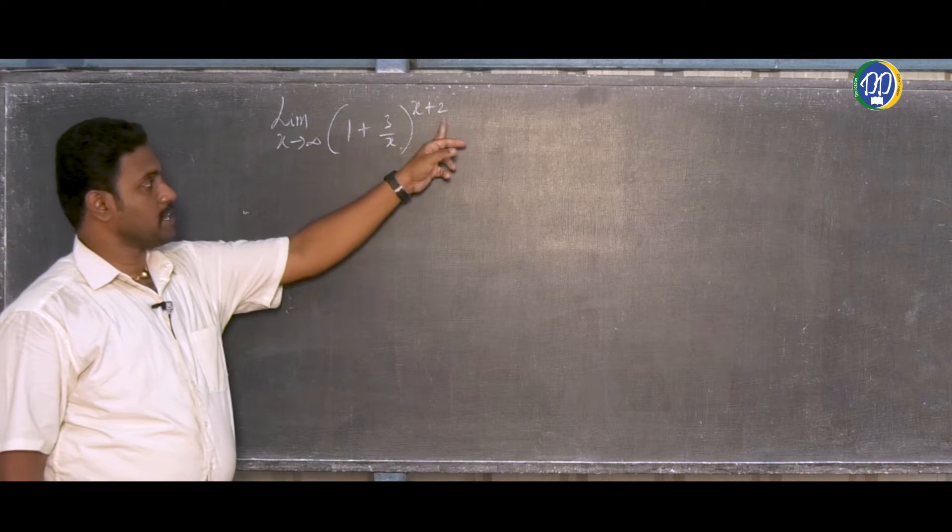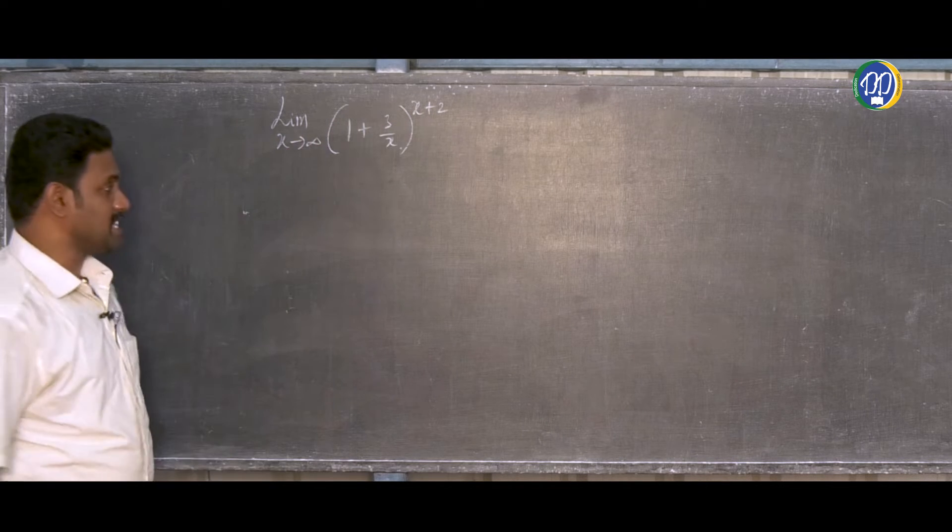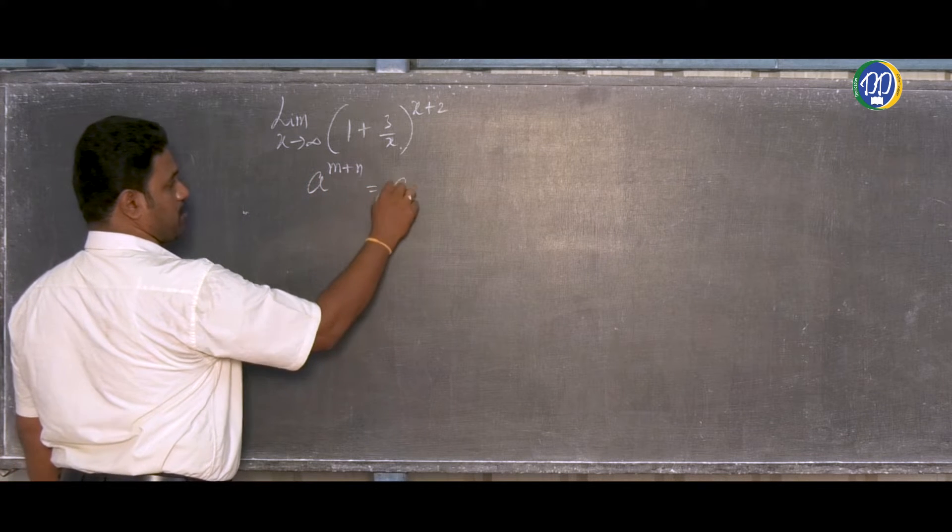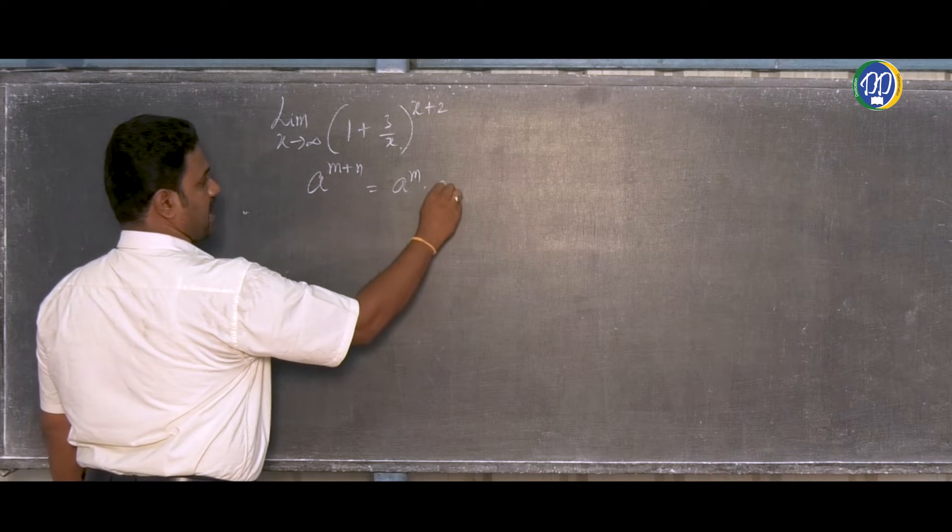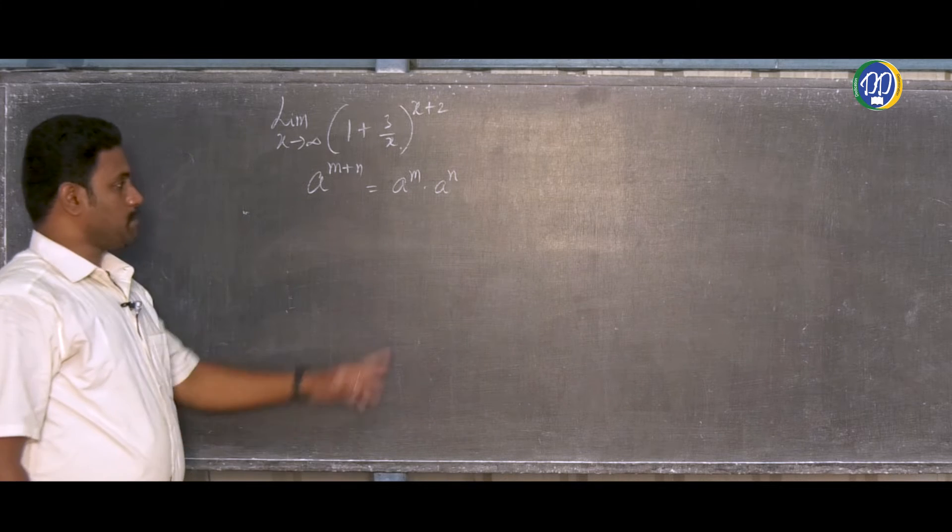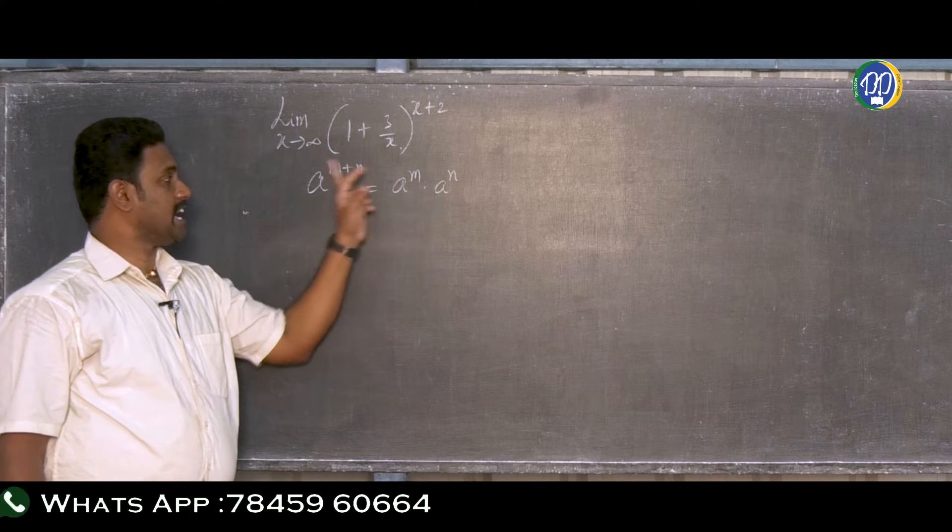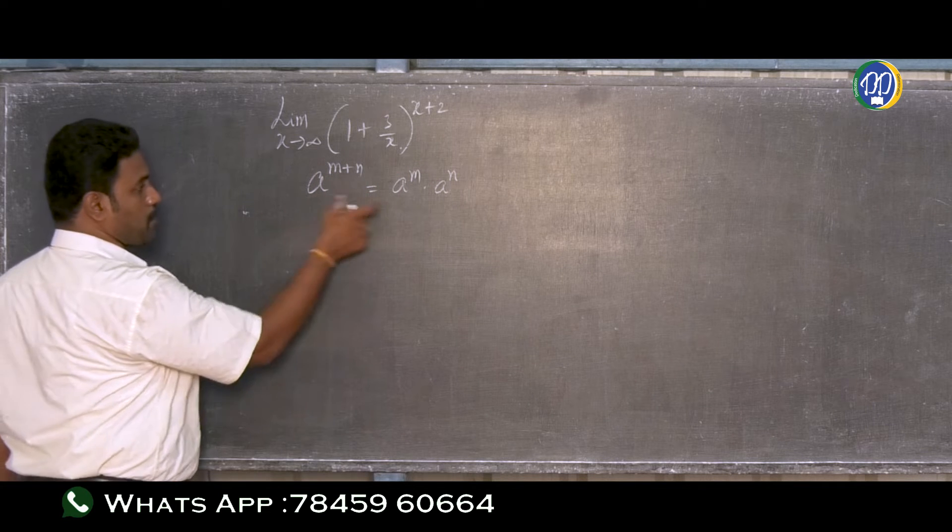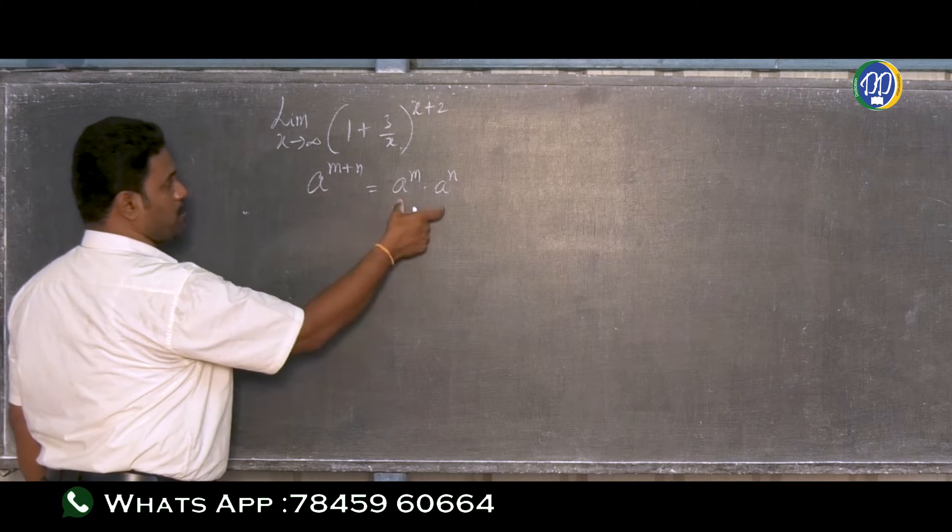When we have a base with power as sum of two terms, we can use the property: a^(m+n) can be written as a^m times a^n. When the base is the same and powers are multiplied, we add the powers. When they're added in the exponent, we can split them as a product. Using this property, we can split the expression.